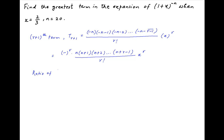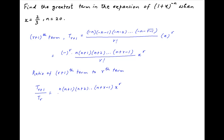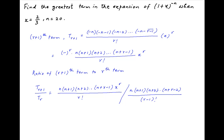Now the ratio of the numerical value of the (r+1)th term to the numerical value of the rth term, that is T(r+1) divided by T(r), is equal to n(n+1)(n+2)...(n+r-1) times x^r divided by r factorial, divided by n(n+1)(n+2)...(n+r-2) divided by (r-1) factorial times x^(r-1).